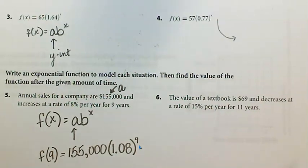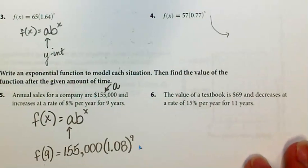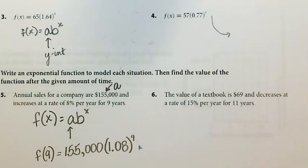Let's look at number 6. The value of a textbook is $69 and decreases at a rate of 15% per year for 11 years. Okay, so this is something that any of us that went to college and had to buy our textbooks were very familiar with. You bought a brand new textbook maybe for $69 and when you go back and try to get rid of it, it's not worth as much. It keeps diminishing in value year after year.